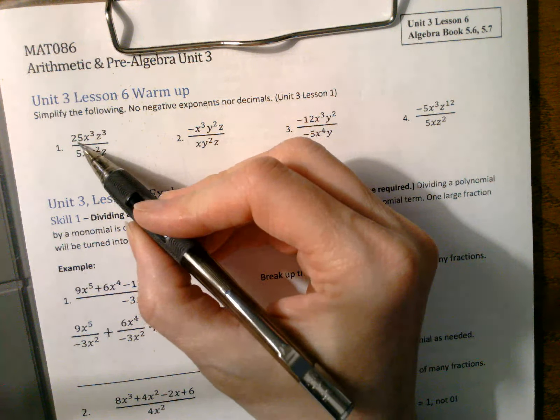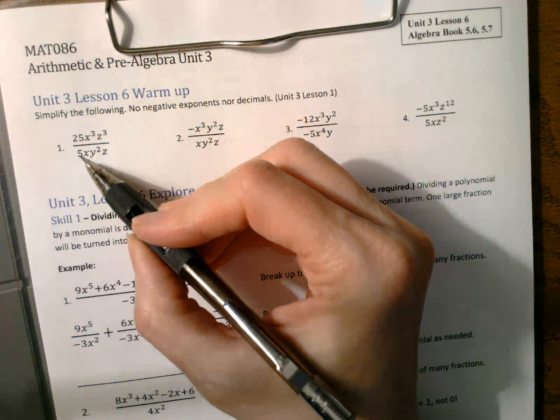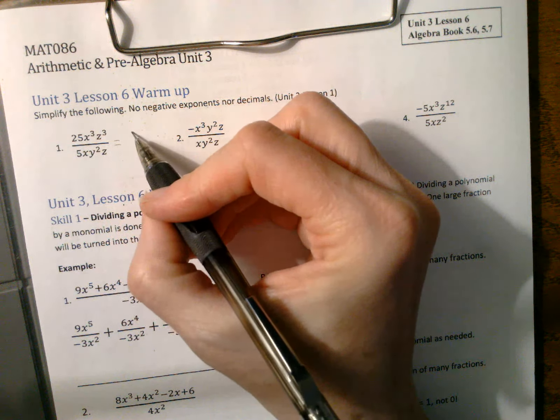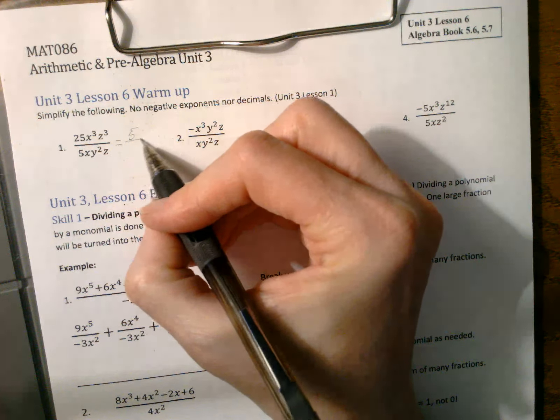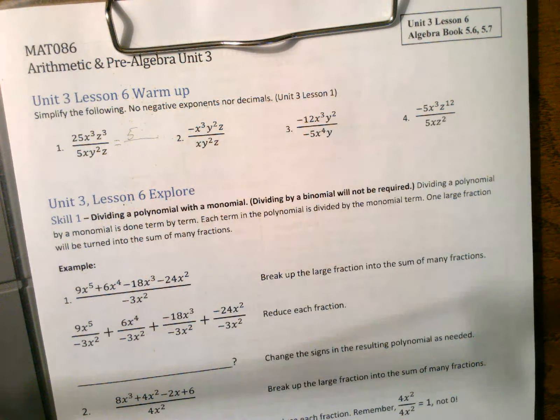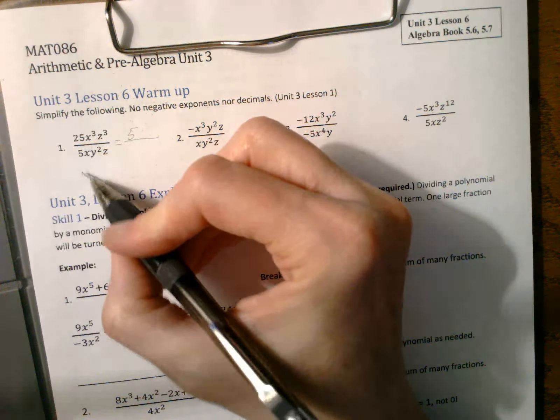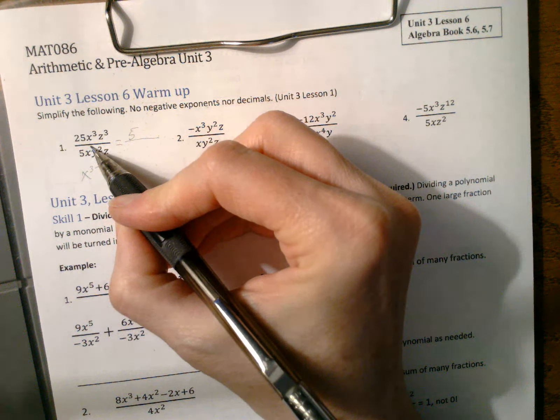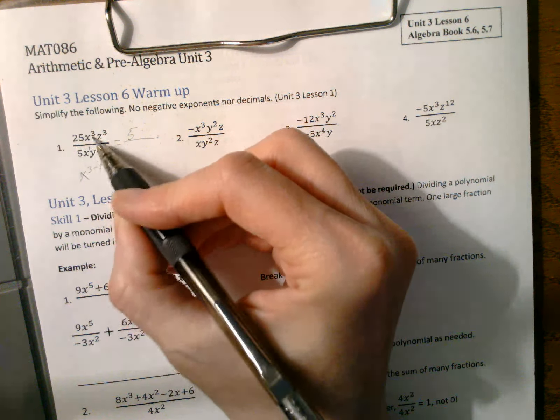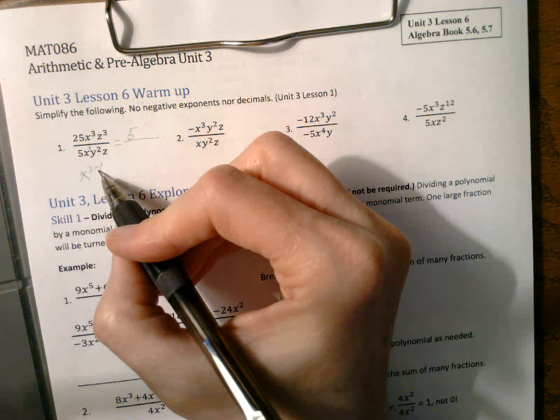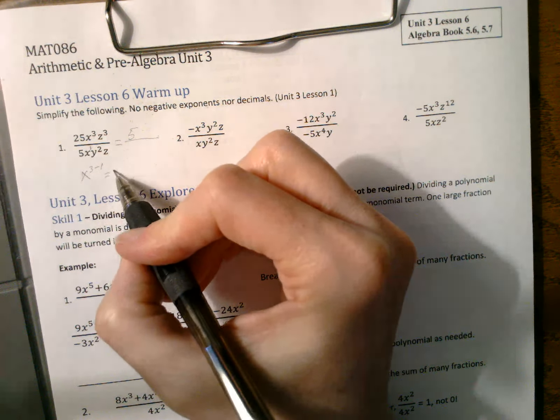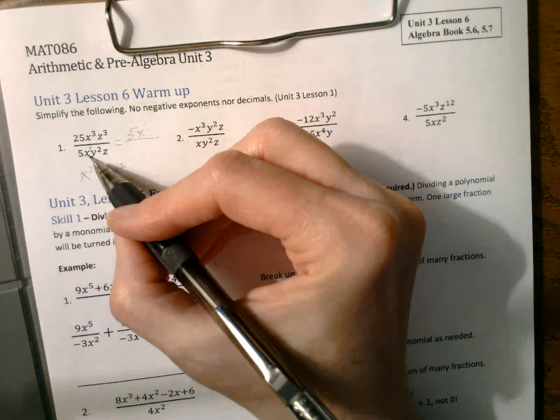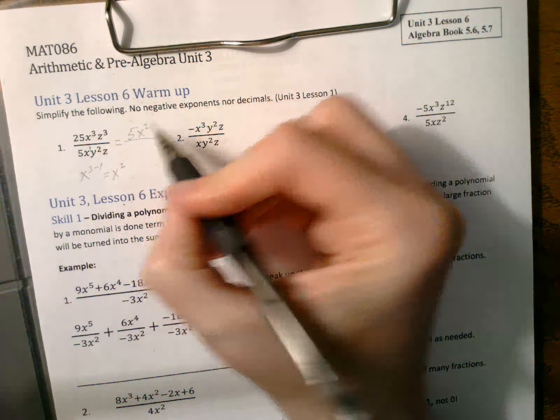Okay, so we always start with numerical coefficient. And 25 divided by 5 is 5. Remember, 25 is larger, so it's on the top. And then we have x to the third minus 1. If there's no exponent here, it's a 1. And when you're dividing the same variable, you're subtracting their exponents. So this is a positive 2, which means if there's 3 up here and 1 down here, there's 2 extra up here.